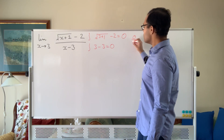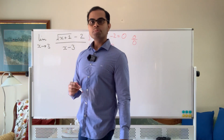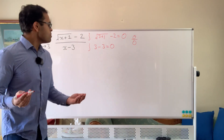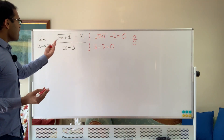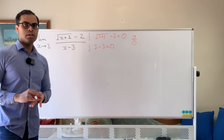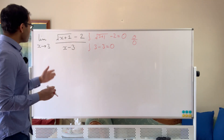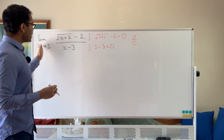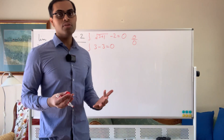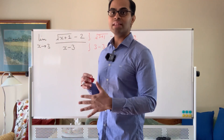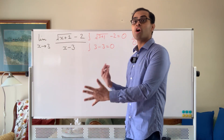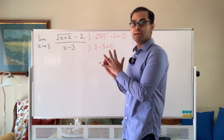So it's a 0 over 0 indeterminate form. With limits, we don't care what is happening exactly at 3 — it's a limit, so what we care about is what happens when x approaches 3. Just because it's 0 over 0 at 3 doesn't mean that as it approaches 3 it's not going to approach something meaningful. That's our goal — to figure out what that is.